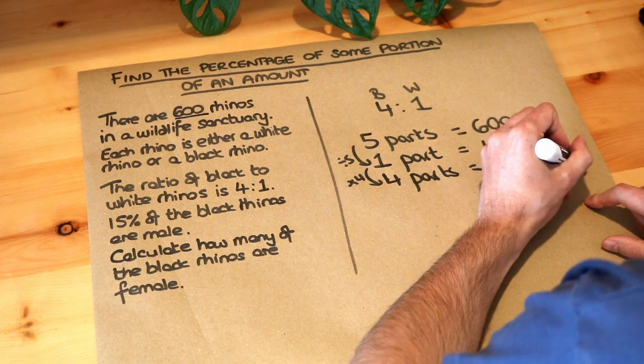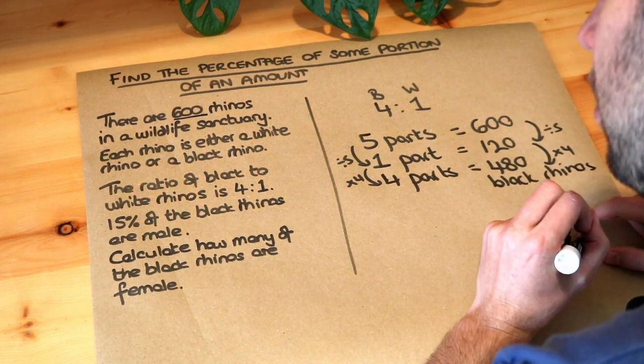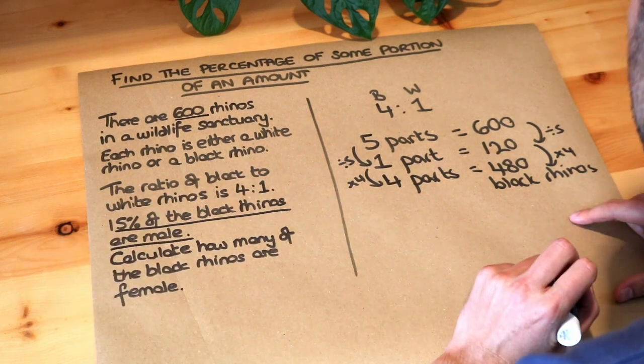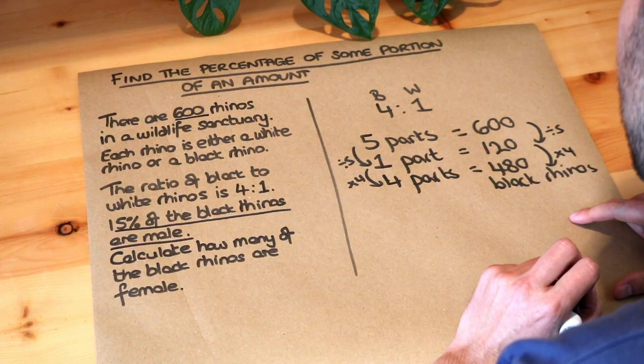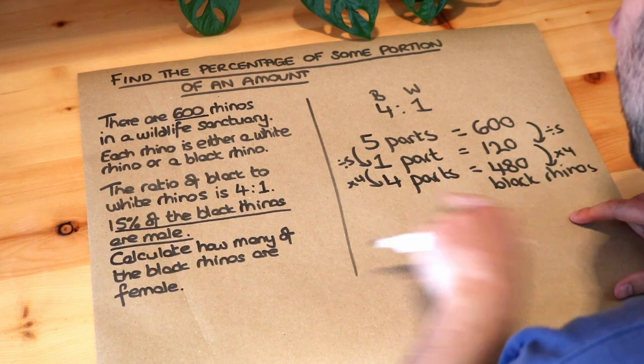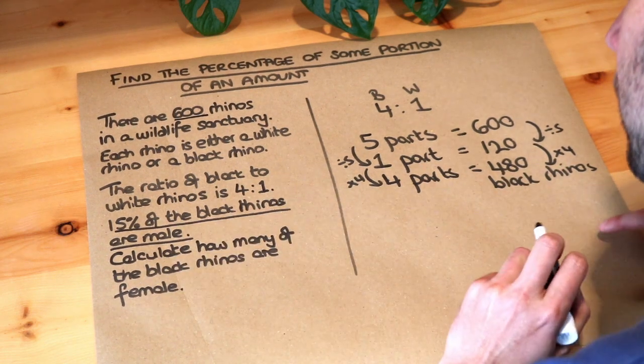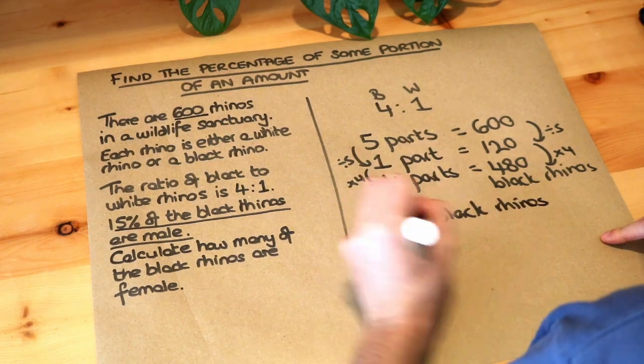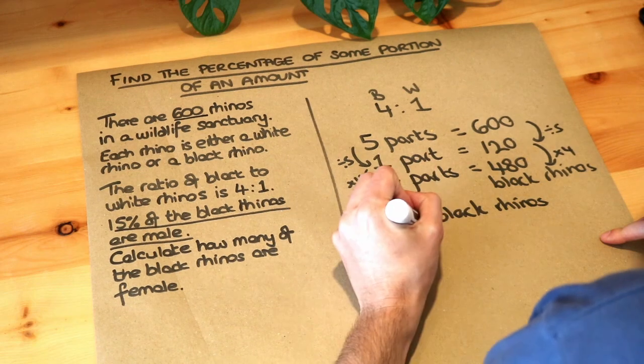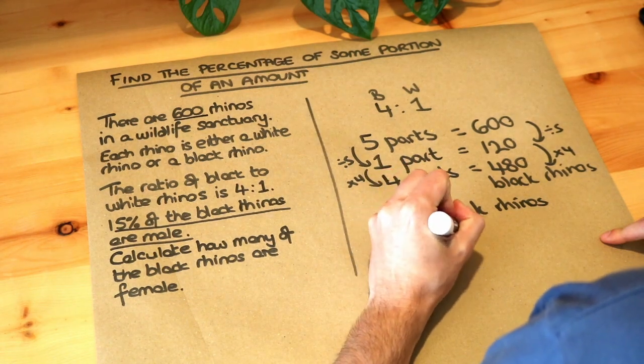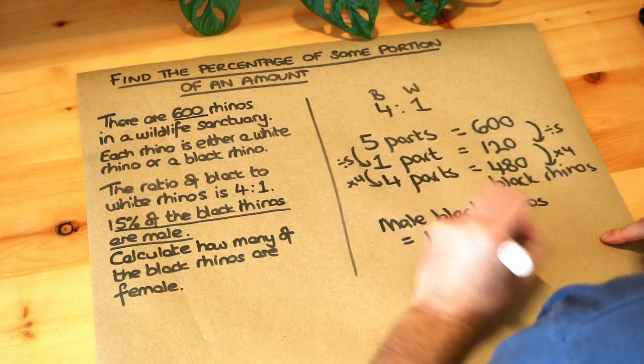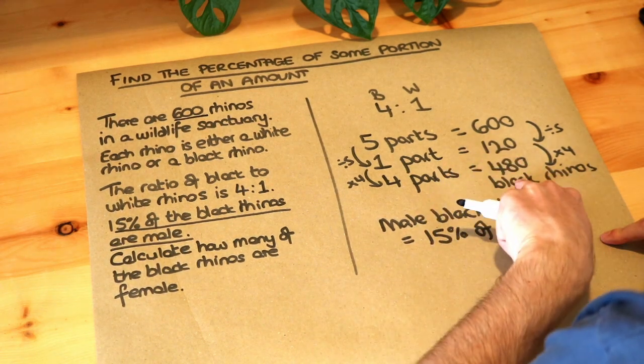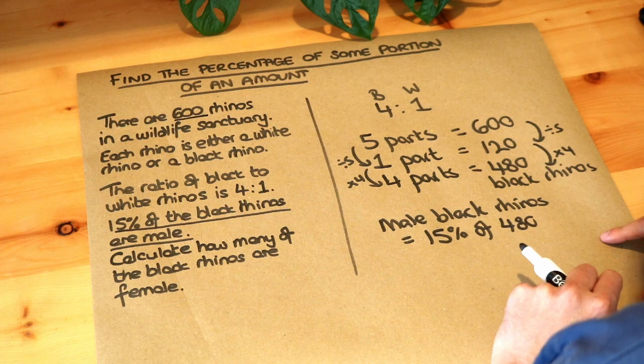Okay, we've done some of the work now. Now we're told that 15% of the black rhinos are male. So of those 480 black rhinos, 15% are male. So male black rhinos, I'm going to write all the work in here, but you might not have to write all of this. 15% of 480. So 15% of the 480 black rhinos are male black rhinos.